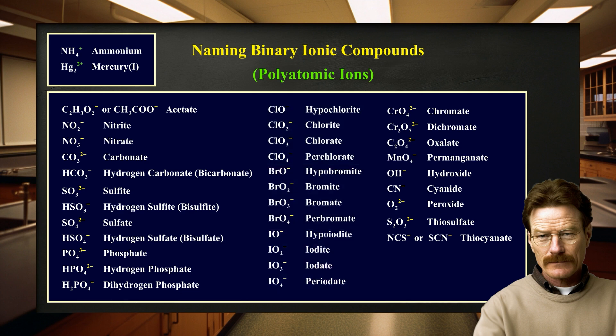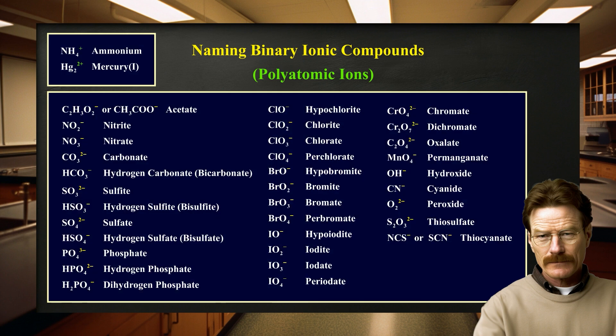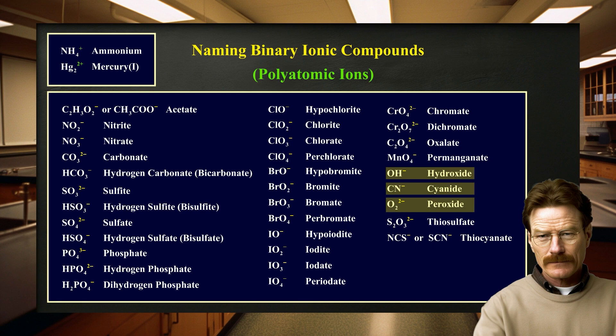Here is a list of common polyatomic ions that you will need to memorize for this class. Notice that nearly all cations are monoatomic, while the majority of anions are polyatomic. The most familiar polyatomic cation is the ammonium ion, NH4+. Very few polyatomic anions carry the -ide ending — of those listed, only hydroxide ion (OH−), cyanide ion (CN−), and peroxide (O2 2−) do.